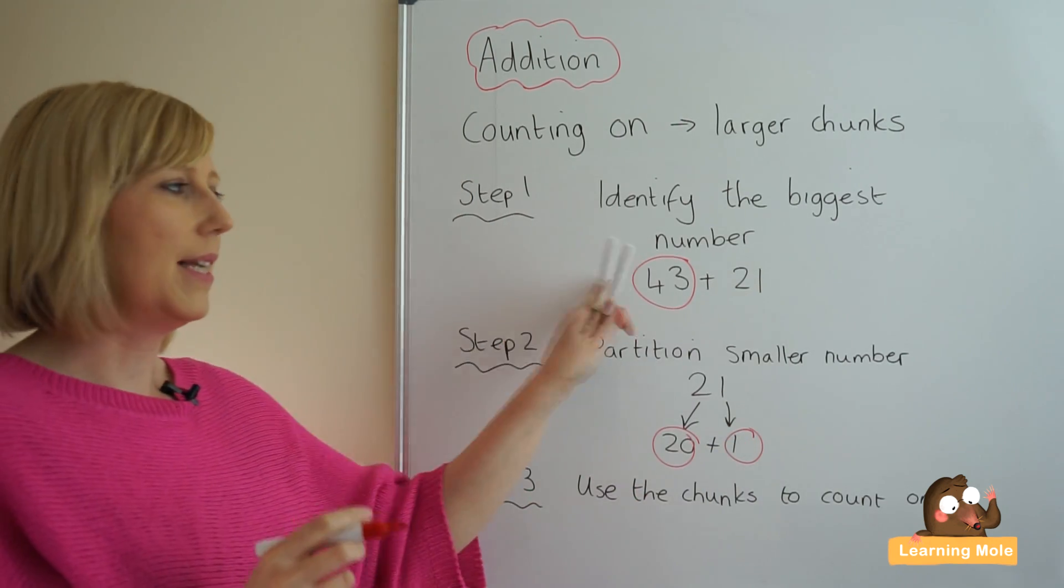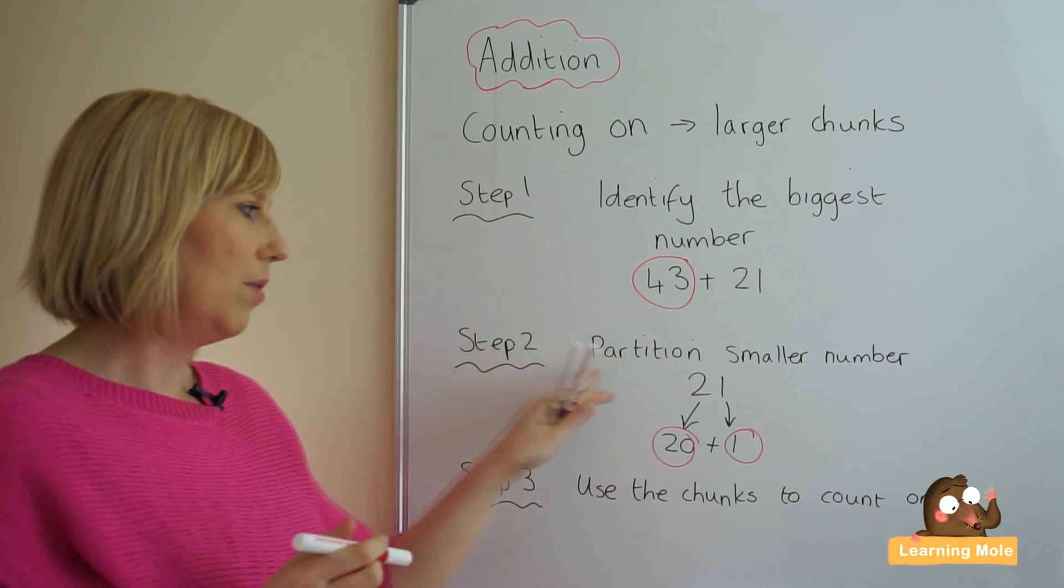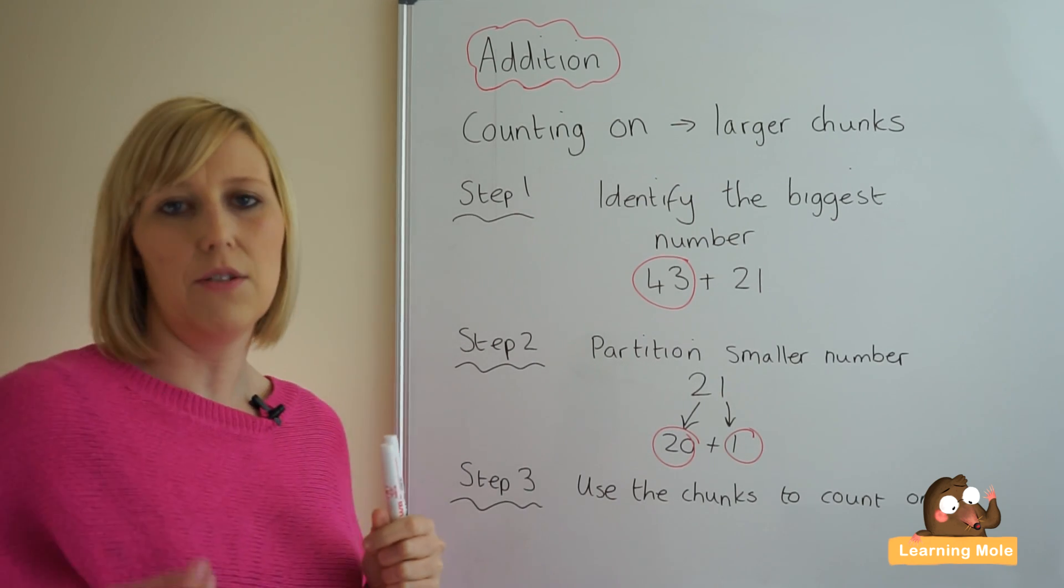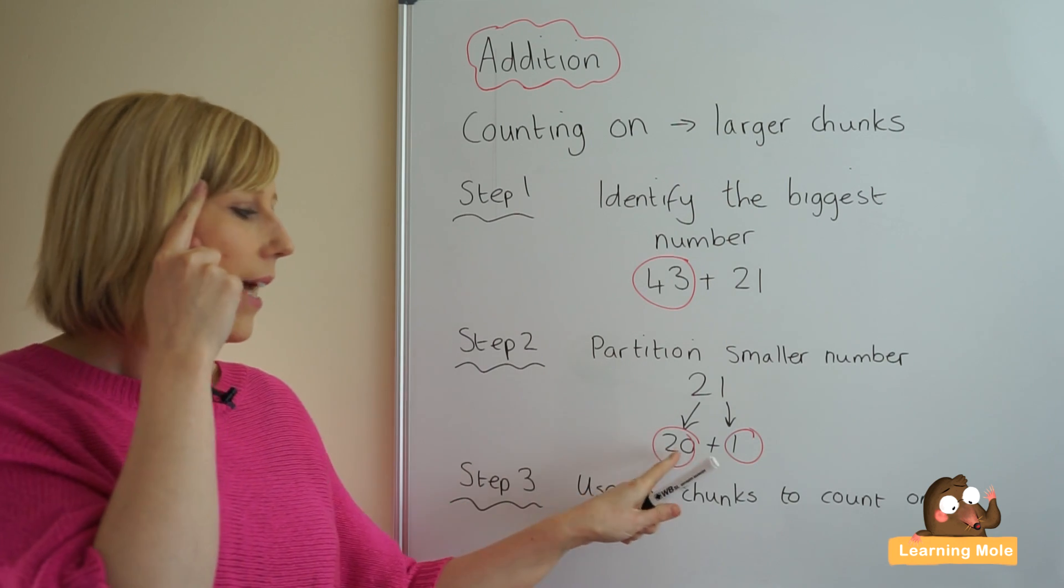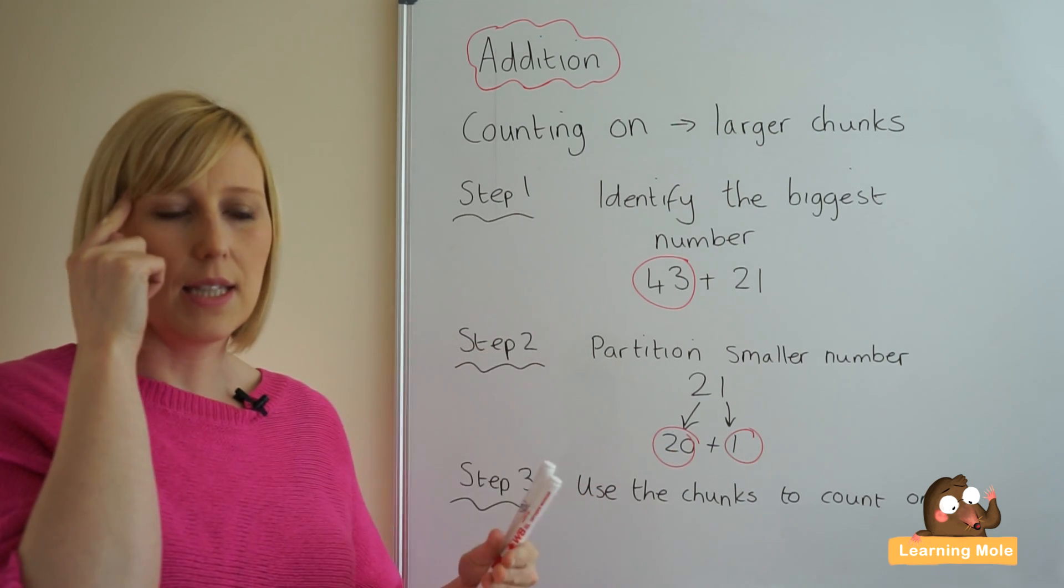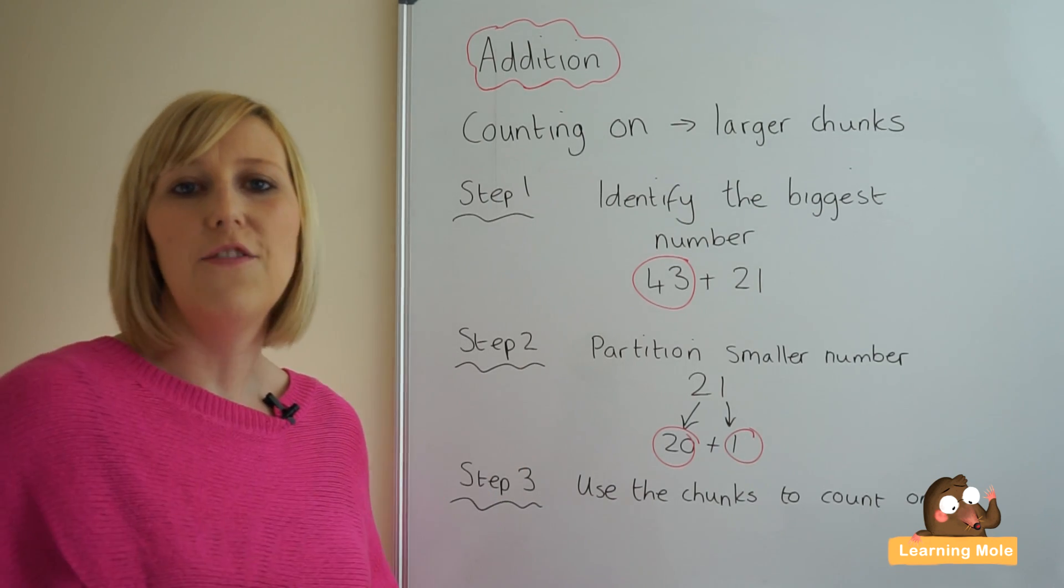So step one, identify the largest number, step two partitioning the smallest number and then using the chunks to count on. So in my head I'm putting 43, add 20 is 63, add 1 is 64.